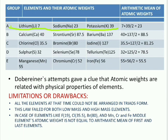In this way, he arranged the elements into triads and gave different groups — Group B, Group C, Group D, Group E. Group B has calcium, strontium, and barium. The arithmetic mean of calcium and barium is 88, which is almost equal to the atomic weight of strontium. Dobereiner's attempts gave a clue that atomic weights are related with the physical properties of elements. Even though this theory is not fully successful, it gave the important idea that physical properties of elements are based on atomic weights.